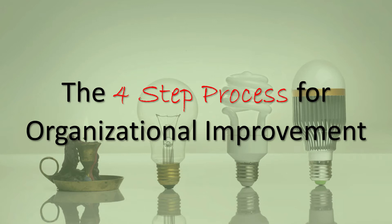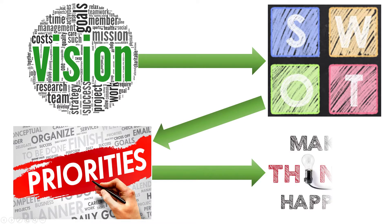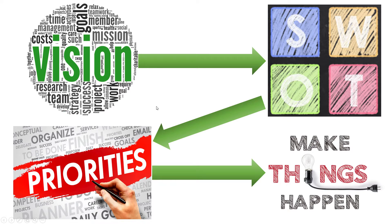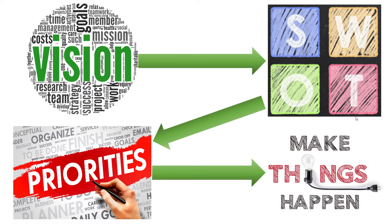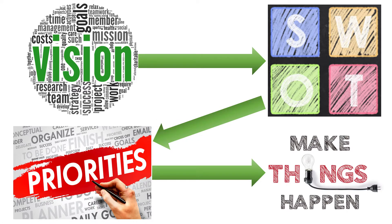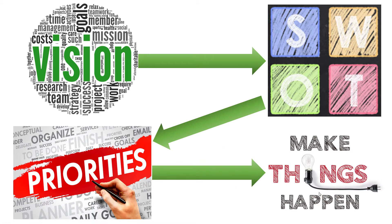Every organizational improvement starts with some sort of vision. Every organization needs to have a vision or a goal it's attempting to accomplish. Once you have a vision, you can go through SWOT analysis — commonly described as strategic planning. You want to take your vision and create a strategic plan to help you realize that vision. The back half of strategic planning is all about setting priorities. And step four is all about making things happen. Having a vision and a strategic plan is great, but you have to put that into action to actually ever achieve your vision.